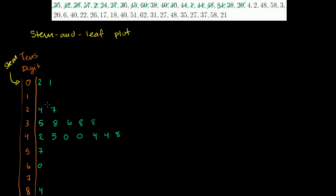A 20. A 4 — that's 0, 4. A 2. Then another 48. A 58. A 3 — that's 0, 3. Then another 20. A 6. A 40. A 22. A 26.